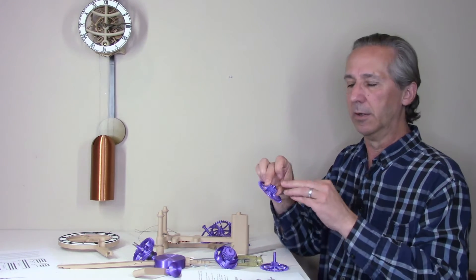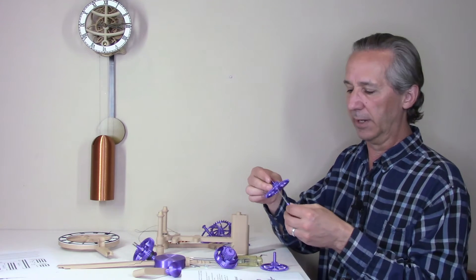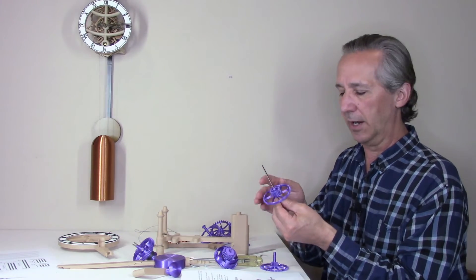If it doesn't spin freely, drill the center hole with an eighth-inch or 3.2mm drill bit. That will allow the gear to spin freely on the arbor.